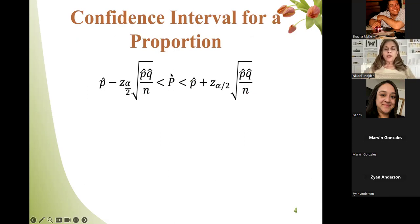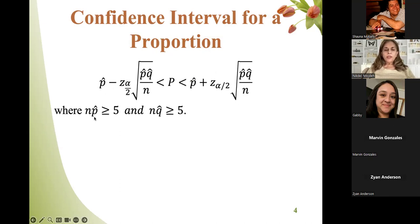You always read the confidence interval from the middle. P, which is population proportion, is less than P-hat plus Z-sub-alpha-over-2 times the square root of P-hat times Q-hat over N. And going back to the middle of the formula, P is larger than P-hat minus Z-sub-alpha-over-2 times the square root of P-hat times Q-hat over N. The product of Z-sub-alpha-over-2 and the radical is the marginal error.